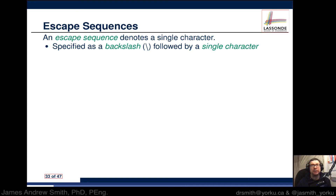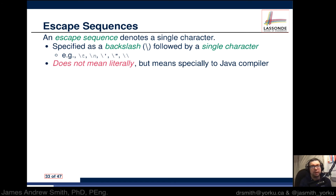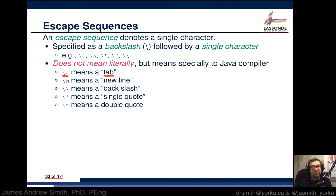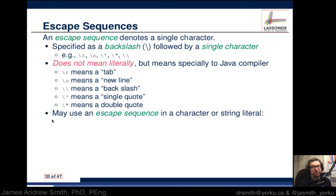Now we need to talk about escape sequences. When dealing with strings, you sometimes need special control characters that are difficult to implement directly. We use a backslash followed by a single character to produce these special characters. For example: backslash-t means tab, backslash-n means newline, double backslash means a literal backslash, backslash followed by a single quote gives a single quote, and backslash followed by a double quote gives a double quote. This is a special way of signaling things to the Java compiler.